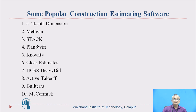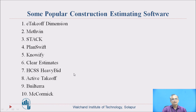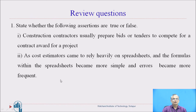These are some popular construction estimating softwares available in the market: E-Takeoff Dimension, Methwin, STAC, PlanSwift, NoviFi, Clear Estimates, SCSS, HeavyBird, Active Takeoff, Bluterra, and McCormick. These can be used for estimating and costing of projects.